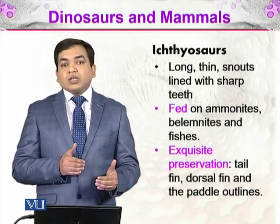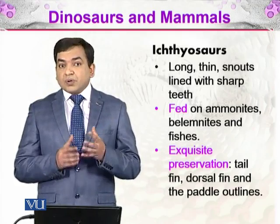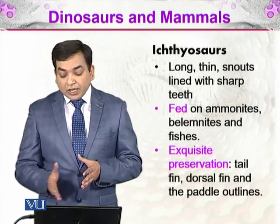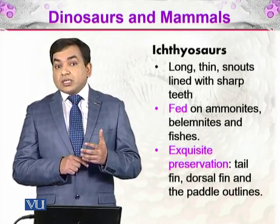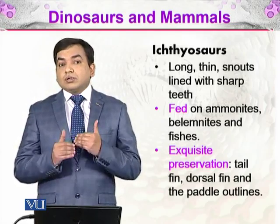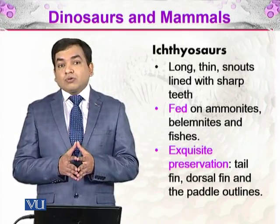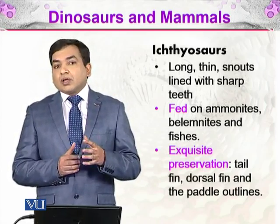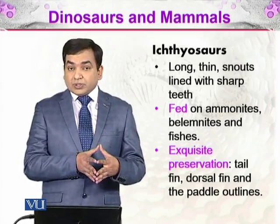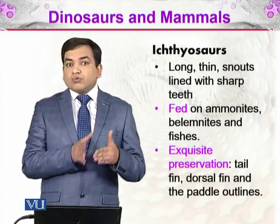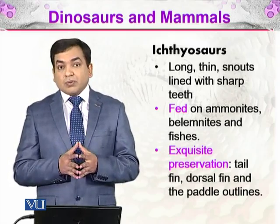The organisms living in the sea or ocean — they were feeding on those organisms. If there is exquisite preservation of the fossils, we would see the tail fin, dorsal fin, and the paddle outline. The dorsal fin is the fin on the back of the animal. The paddle is a very non-bony and very delicate tissue, so it couldn't always be preserved, but if preserved, it would leave some outline visible in some fossil specimens.